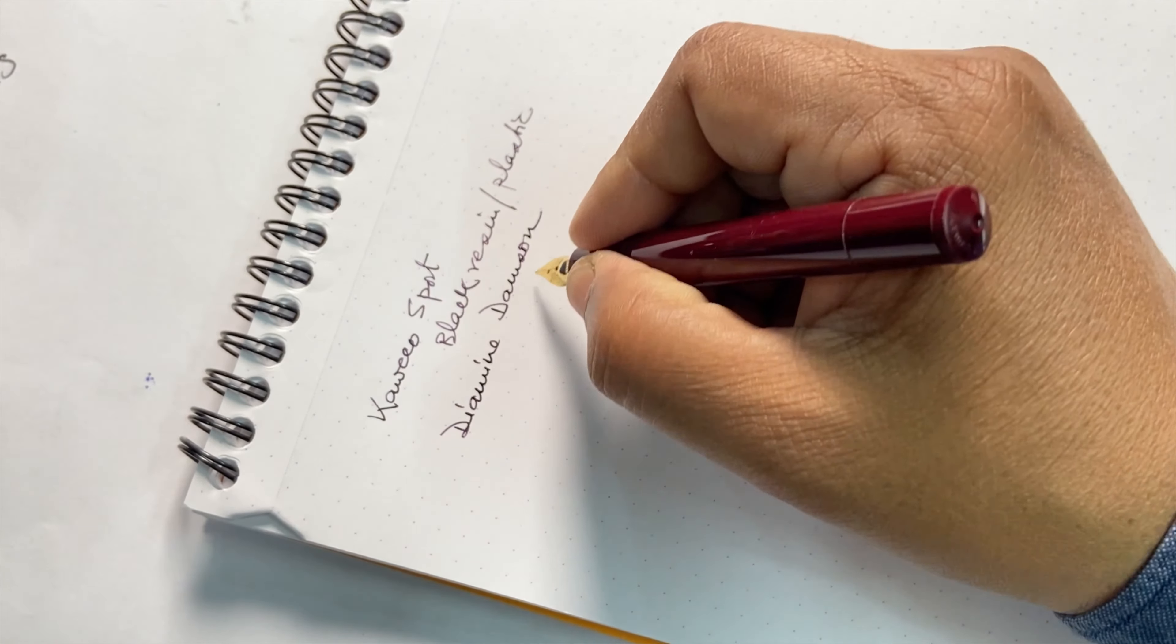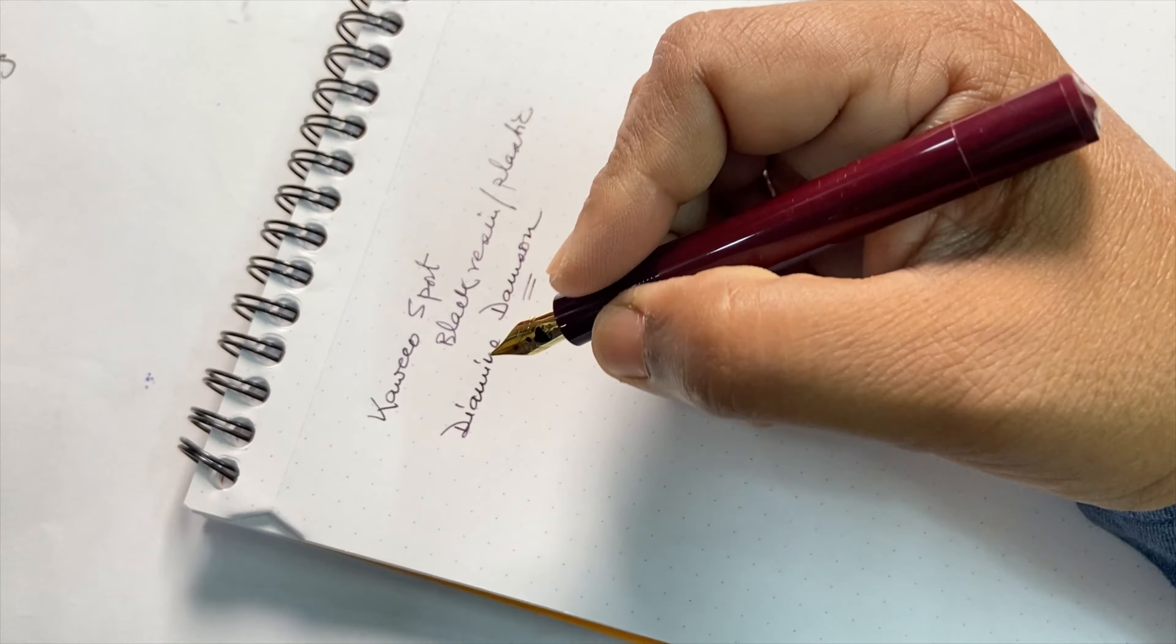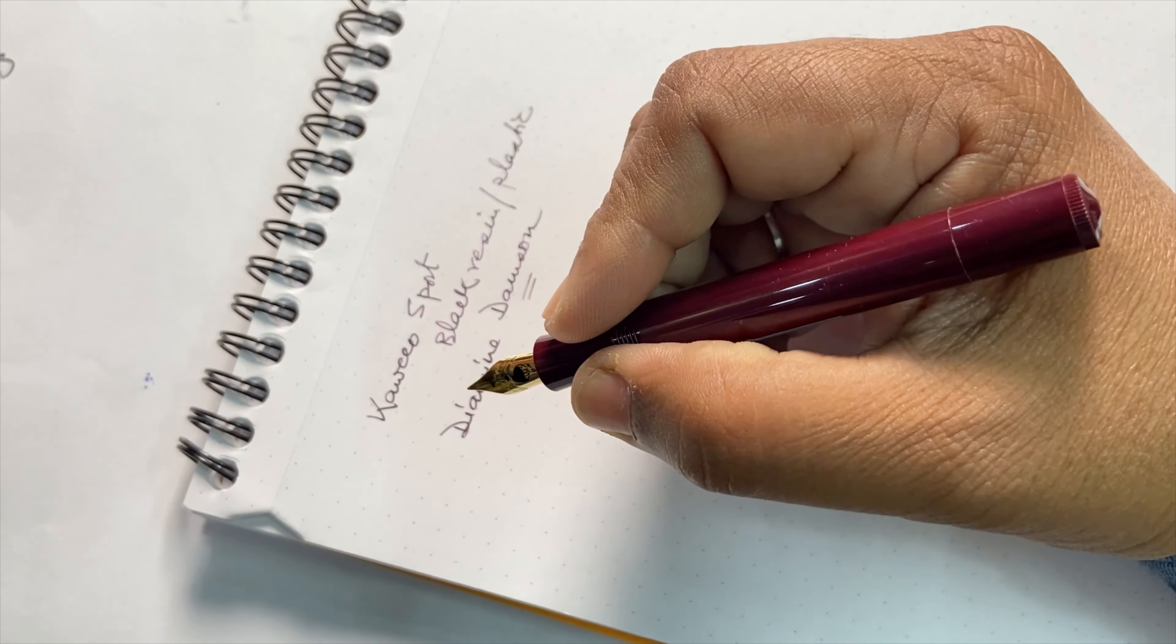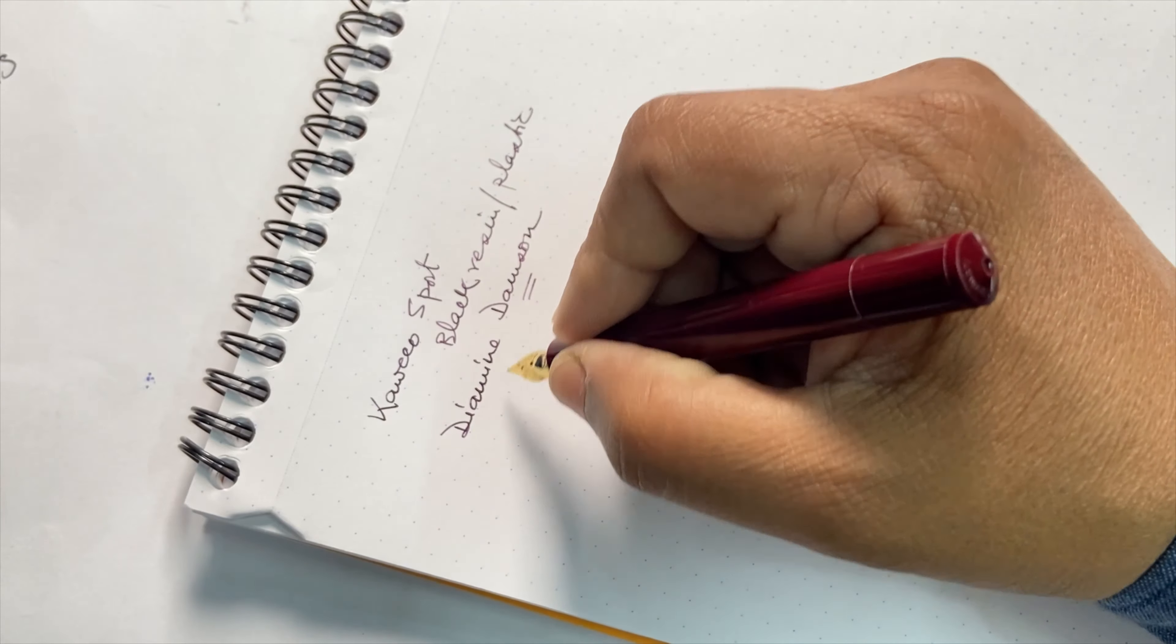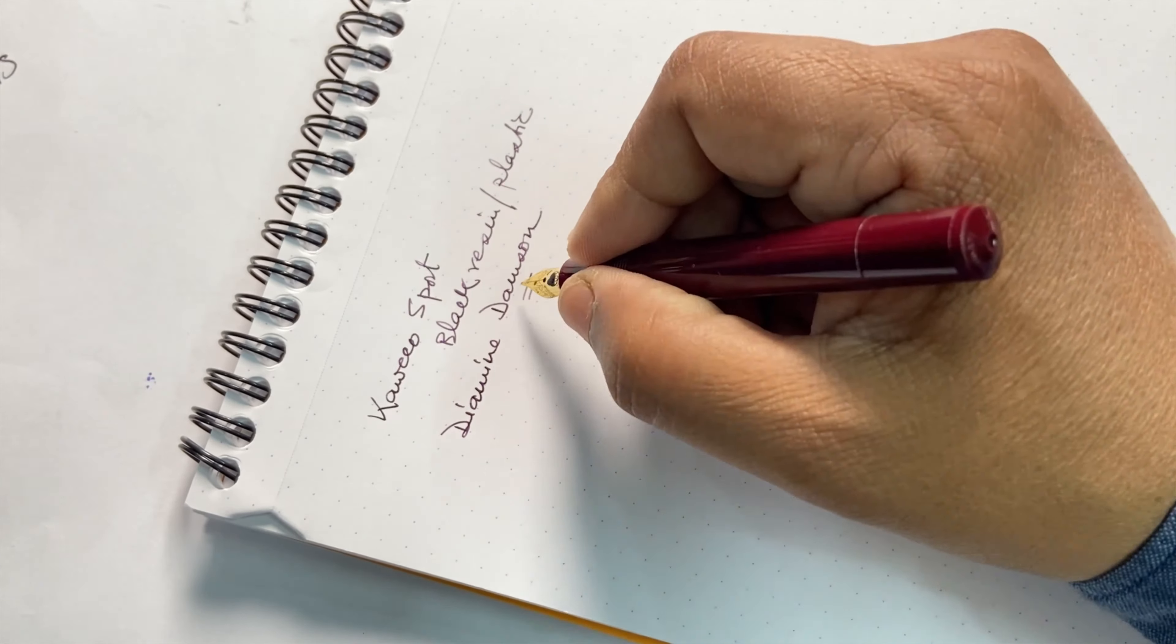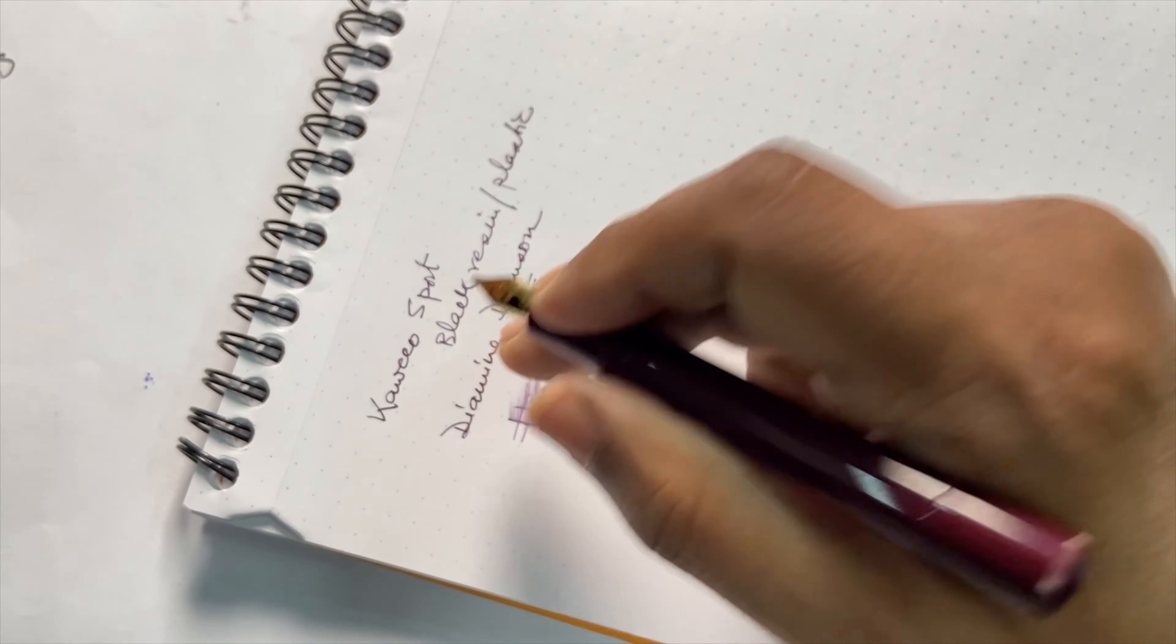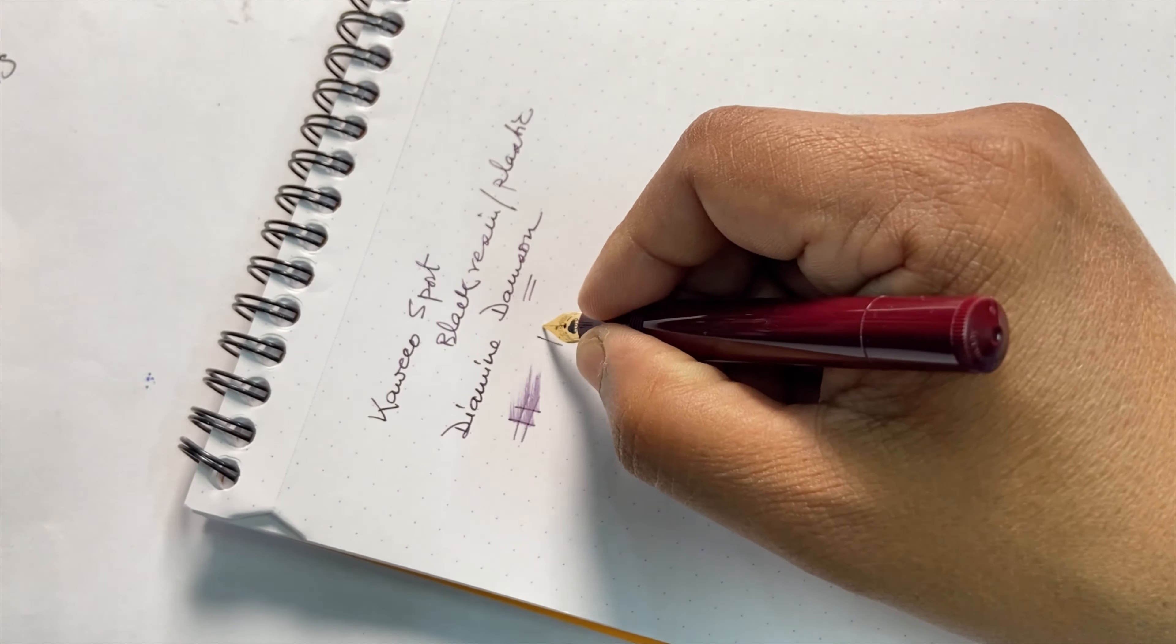Now Diamine Damson is a drier than normal ink, so logically, if I'm using a fine nib version of any pen, I won't have that much of a wetness transfer to paper. As you can see, it's not very wet.